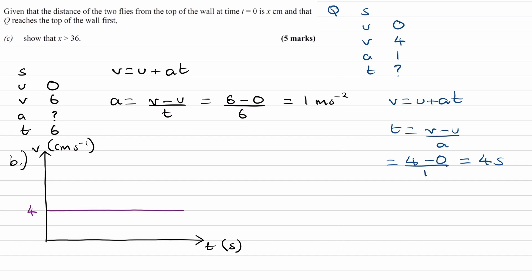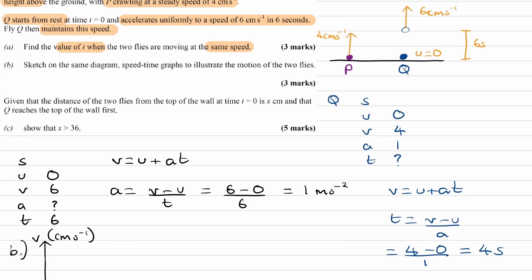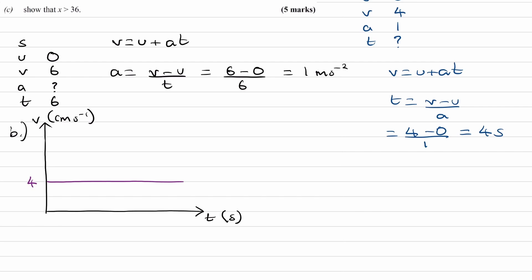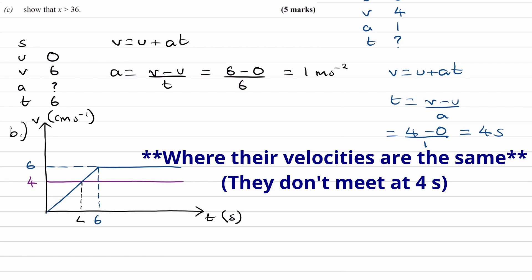And then for Q, we know that Q will go from 0 to 6 centimeters per second in 6 seconds. We're also told it's a uniform acceleration, hence why we could have used SUVAT in the first place. So putting that in blue, goes from 0 to 6 centimeters per second in 6 seconds. And then it will hold that speed for the rest of the journey. We also worked out that this time over here, where the two flies meet, is after 4 seconds.